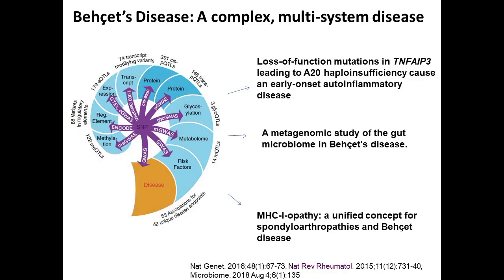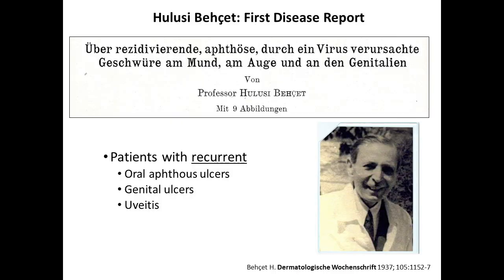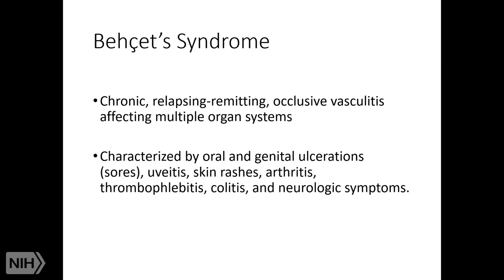This is my outline. Behcet is a complex multifactorial disorder, first described by Hulusi Behcet, who was a Turkish dermatologist. The first description was published in 1937 in German journals. They called it three symptoms at the beginning: oral aphthous ulcers, genital ulcers, and uveitis — and still we are diagnosing most of our patients with these three symptoms.